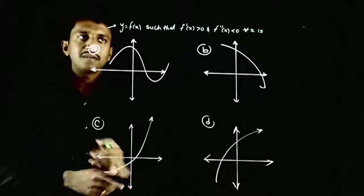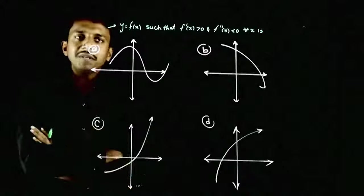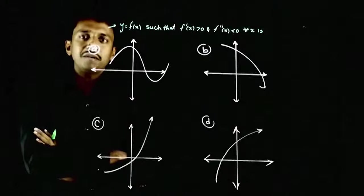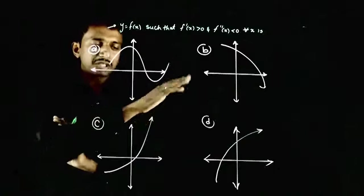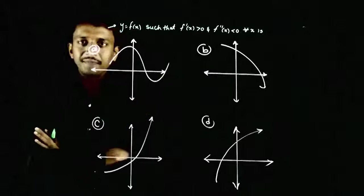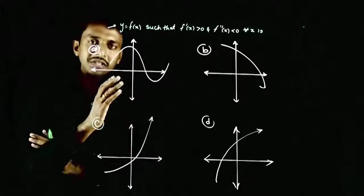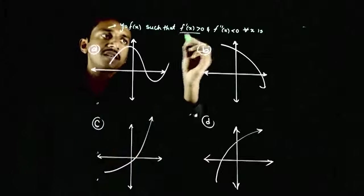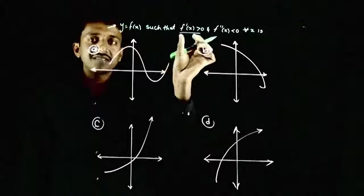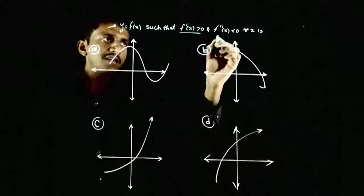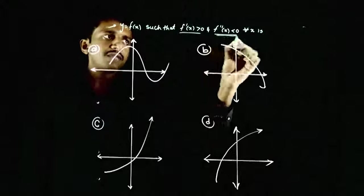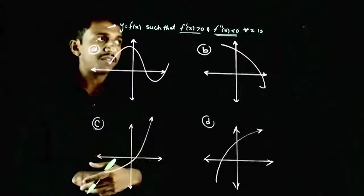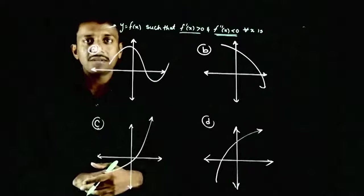Welcome students. In this question, you are given y is equal to f of x. Aapko chaar graphs mila. The question is, which graph satisfies both conditions: f dash of x is greater than zero and f double dash of x is less than zero, for all x.